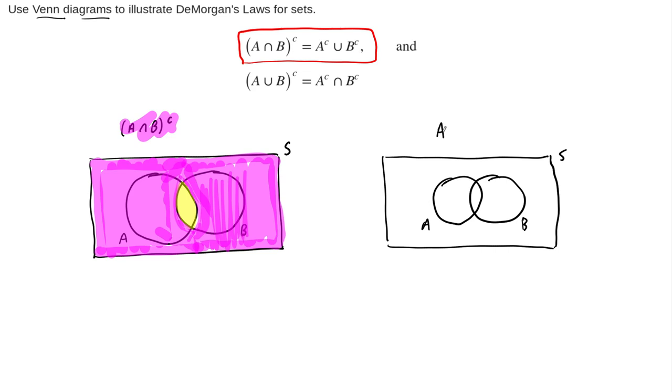This time we want to construct or shade the A complement, union with B complement. So we're going to start with A complement. So A complement is everything inside of S that is outside of A. Now, outside of A means that it includes most of B, but it doesn't include the portion of B that lives in A. So this is it. This is our A complement.